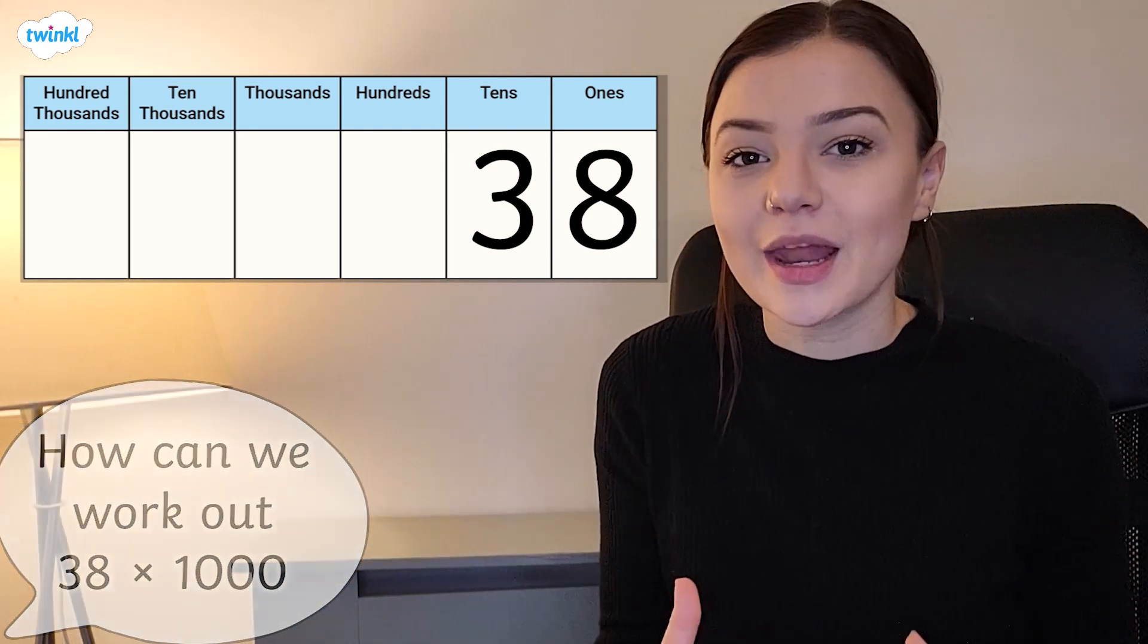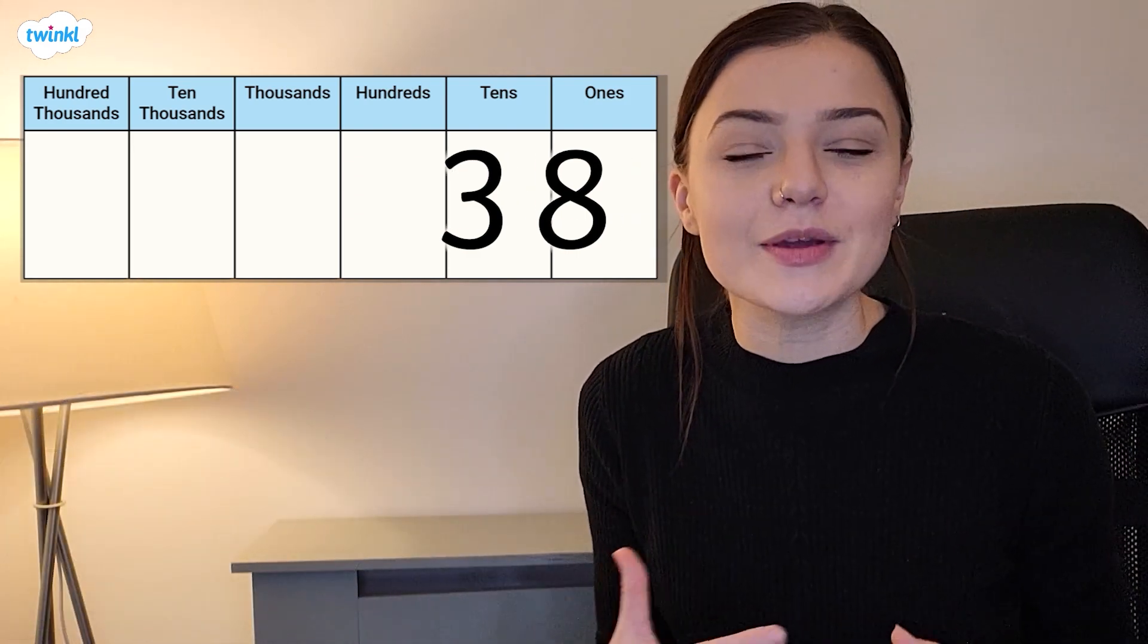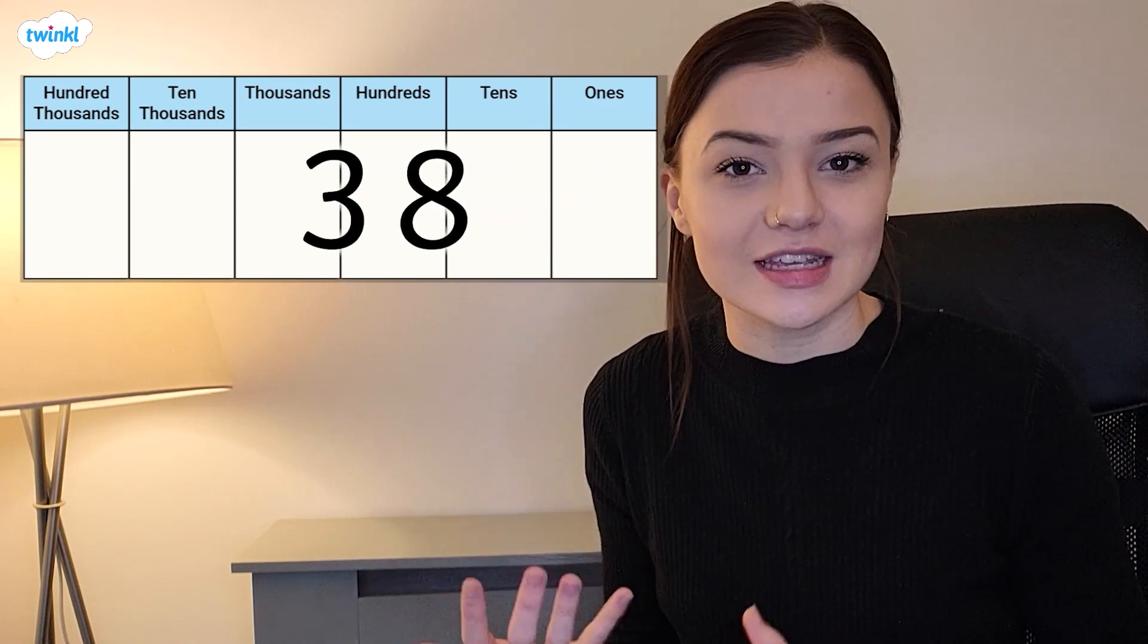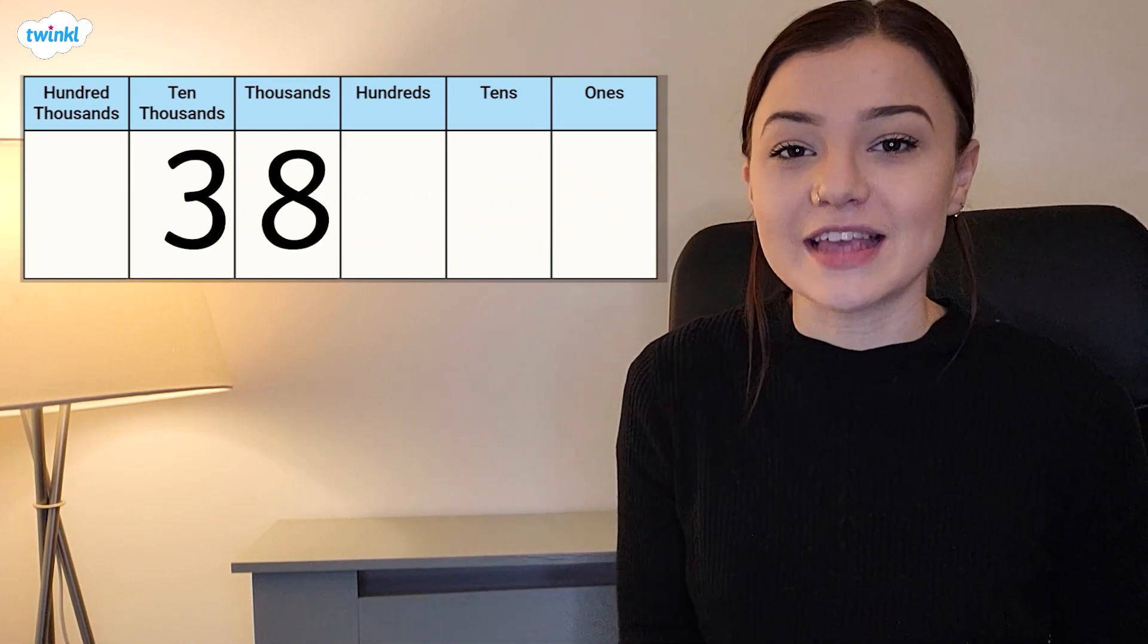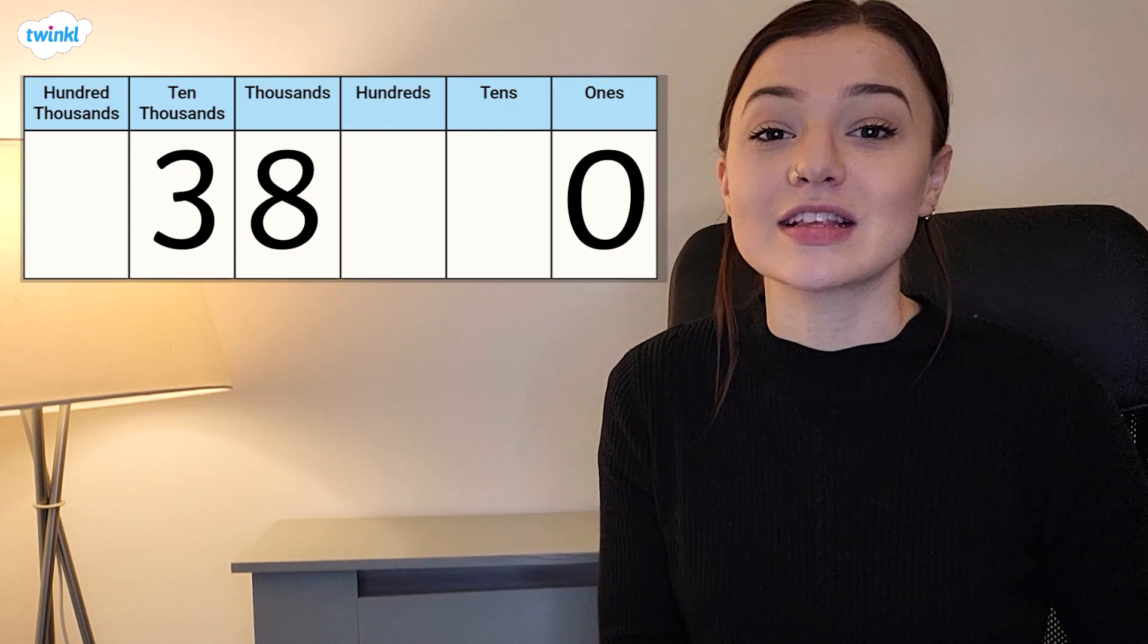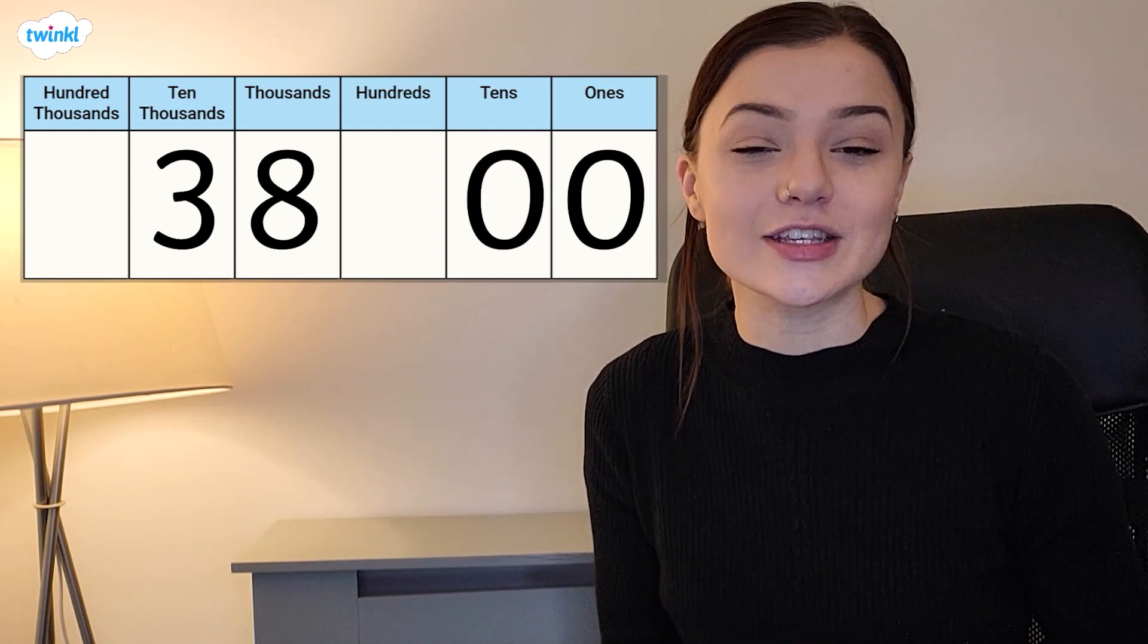We know that in order to multiply a number by 1000, we need to move our digits three place value columns to the left. We now have zero in the ones column, zero in the tens column, and zero in the hundreds column.